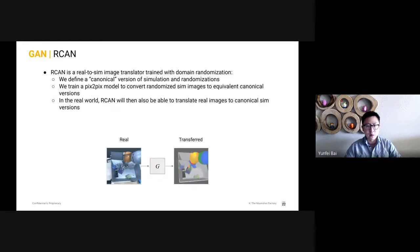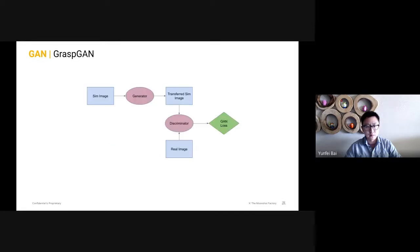And finally, when it is applied to the real world grasping, the real world image is fed into the generator to produce the adapted image that is close to the canonical form. In this way, we can bridge the gap between real and sim. And now if we look back at the GraspGAN structure, the idea is to replace sim image input with randomized sim image and replace real world image input with canonical sim image. We train a generator that can convert the randomized sim images to the canonical sim images.